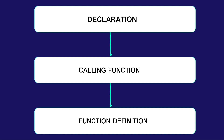Parameters simply mean what is needed for the function. For example, if you are calculating the average of three numbers, you need three numbers, so you declare those as parameters. After that, calling a function means you call it to perform a certain task by assigning values. After calling, the function definition executes — that is the actual code to perform the task. This is where the actual code is written.